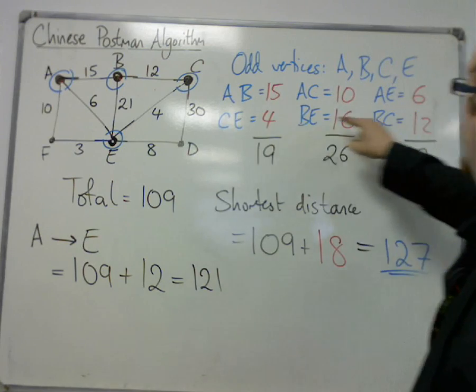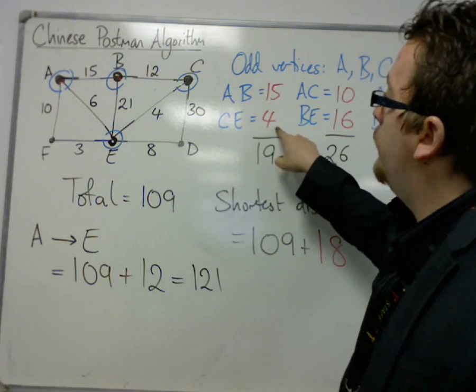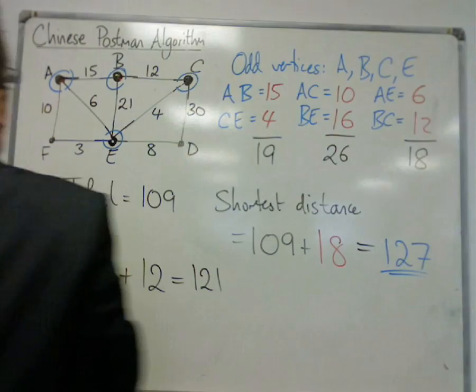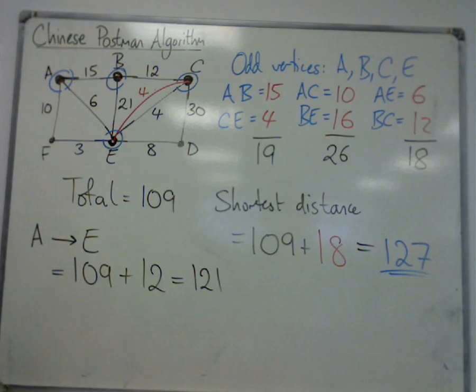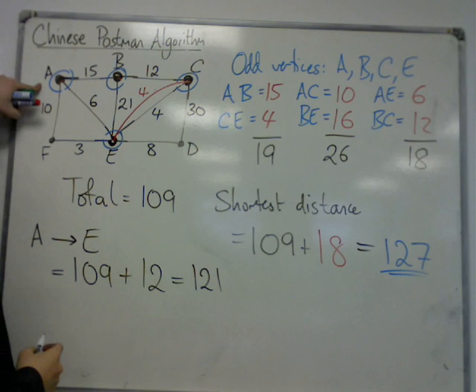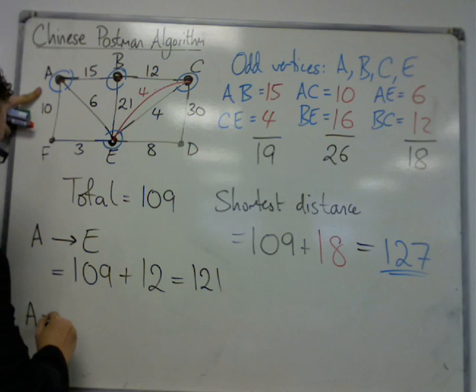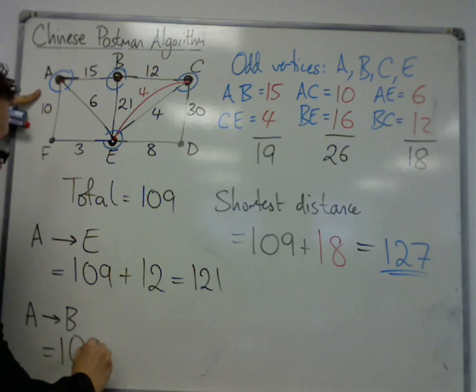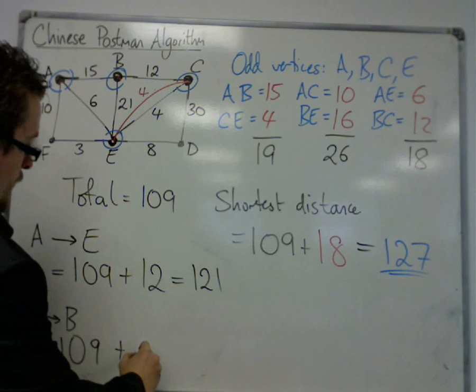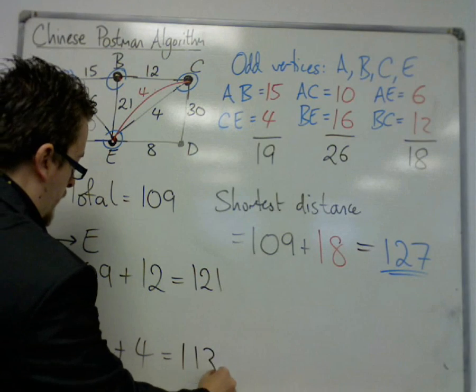That is the shortest. So, if I add in CE of 4, this has made the graph semi-Eulerian, which means I can now start and finish at A or B. So, A, and then finish at B, would be traversing the whole graph, 109, and then adding in the shortest actual edge that I could add in, which is 113.